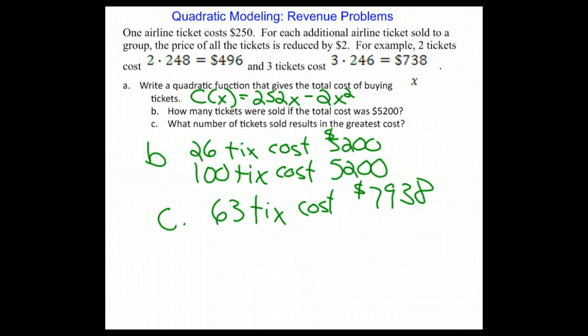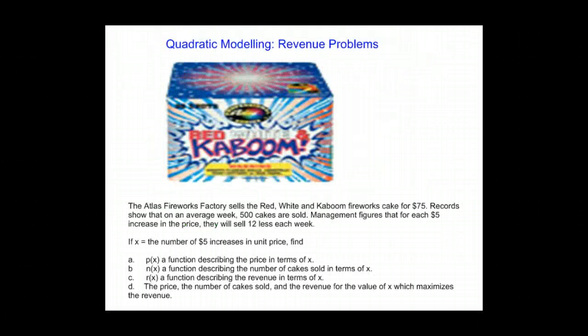Now it's your turn. The Atlas Fireworks Factory sells the red, white, and kaboom fireworks cake for $75. Records show that on an average week, 500 cakes are sold. Management figures that for each $5 increase in price, they will sell 12 less each week.